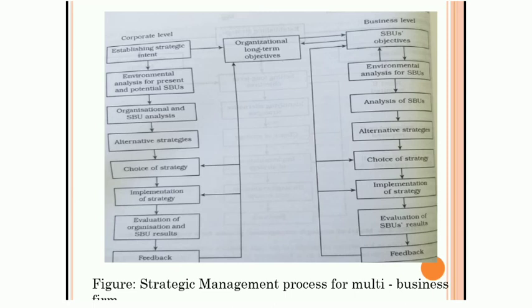At the SBU level, the first step is for each SBU to set its own objective. Then each SBU analyzes environmental factors — basically external factors such as political, legal, technological, and cultural factors. Then each SBU analyzes their own internal situation, followed by identifying alternative strategies, choice of strategy, and implementation of strategy.